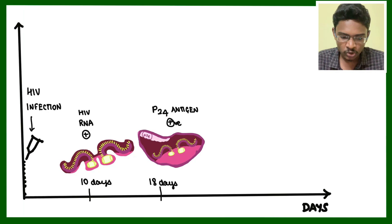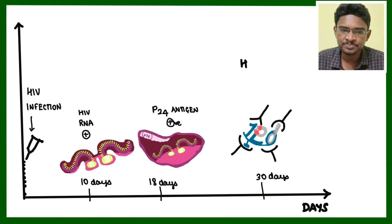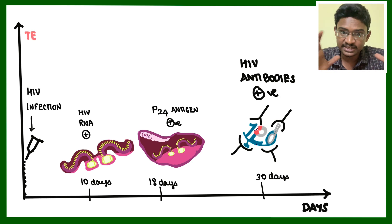At the end of one month, antibodies will be slowly formed against this virion. Antibodies against gp41 and gp120 and many other spike proteins are formed. To detect these antibodies, we will be using ELISA test.